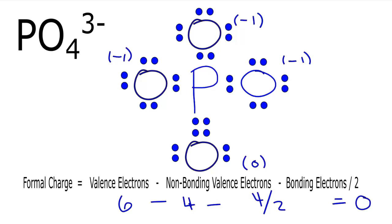With formal charges we're trying to find the configuration of valence electrons that are closest to zero, or in this case closest to the negative 3 on the phosphate ion. This is the most favorable Lewis structure for PO4³⁻. This is Dr. B with the formal charges for PO4³⁻, the phosphate ion. Thanks for watching.